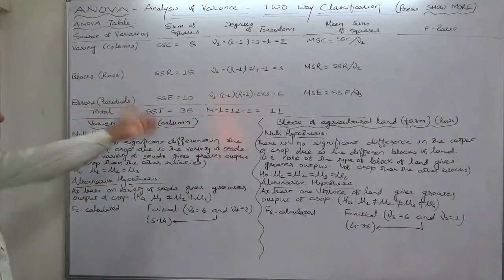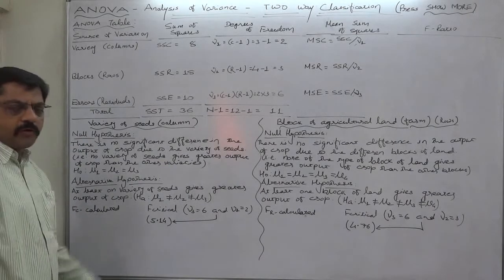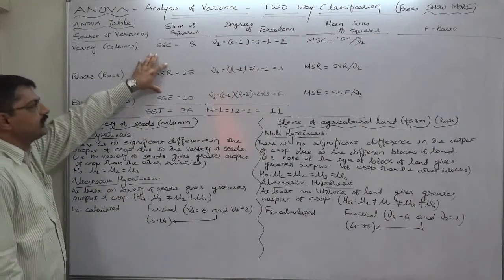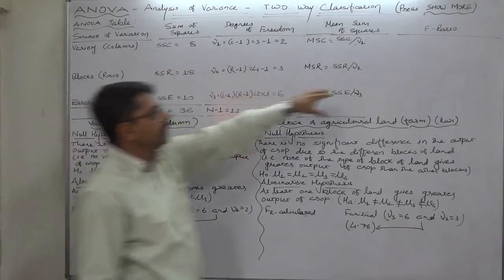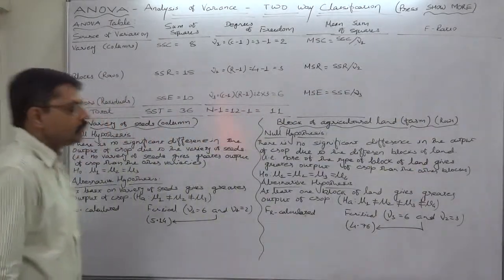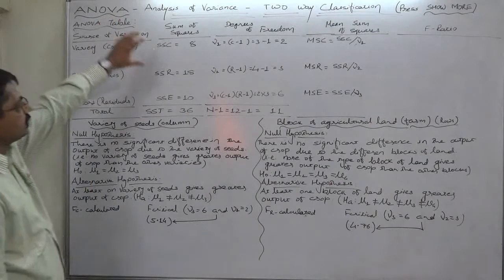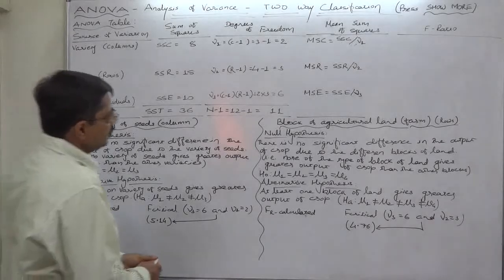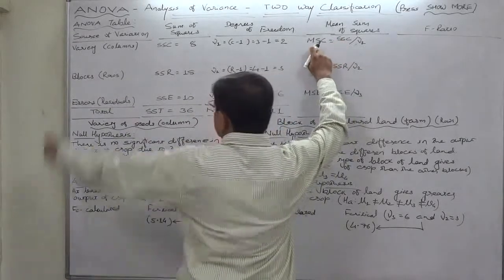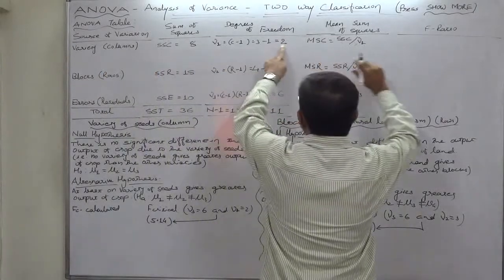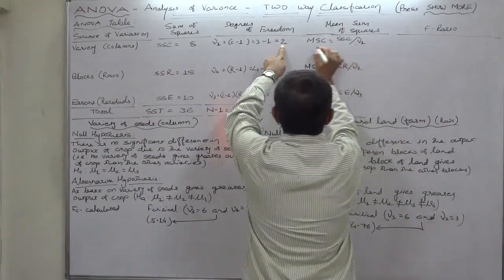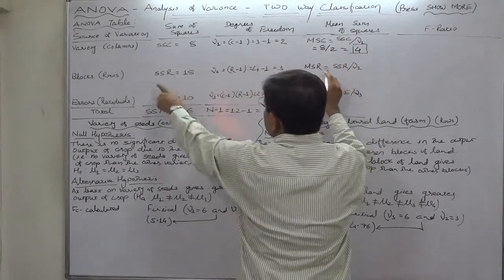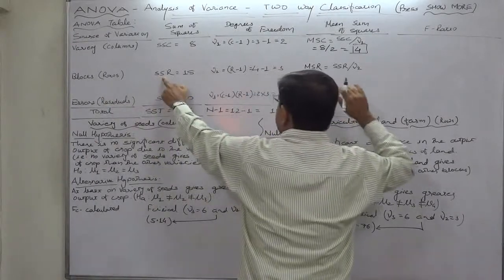Let's complete the ANOVA table and then proceed to hypothesis testing. ANOVA itself is a systematic approach to calculate the F-ratio. In the case of two-way classification, we have already substituted the values of SSC, SSR, and SSE from the previous lecture. Now let's calculate MSC — mean sum of squares for the variety or columns — that is SSC divided by ν₁, which is 8 divided by 2, equals 4.